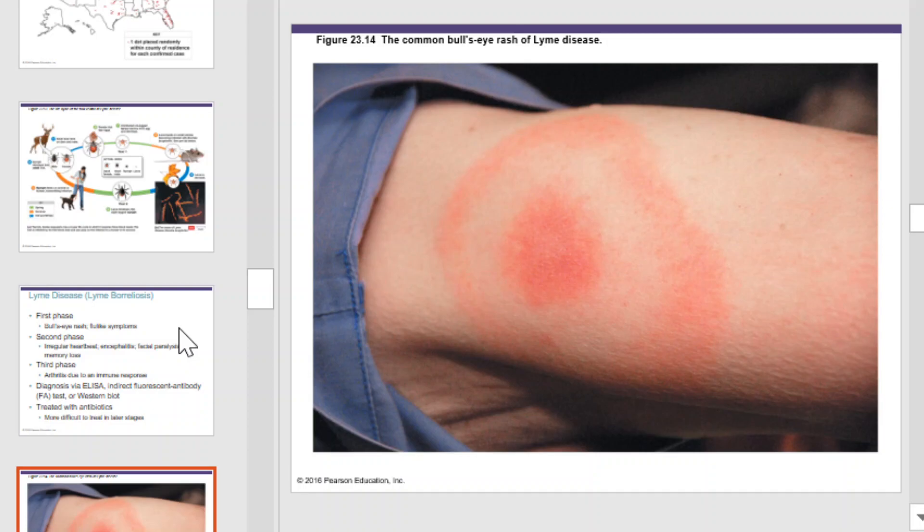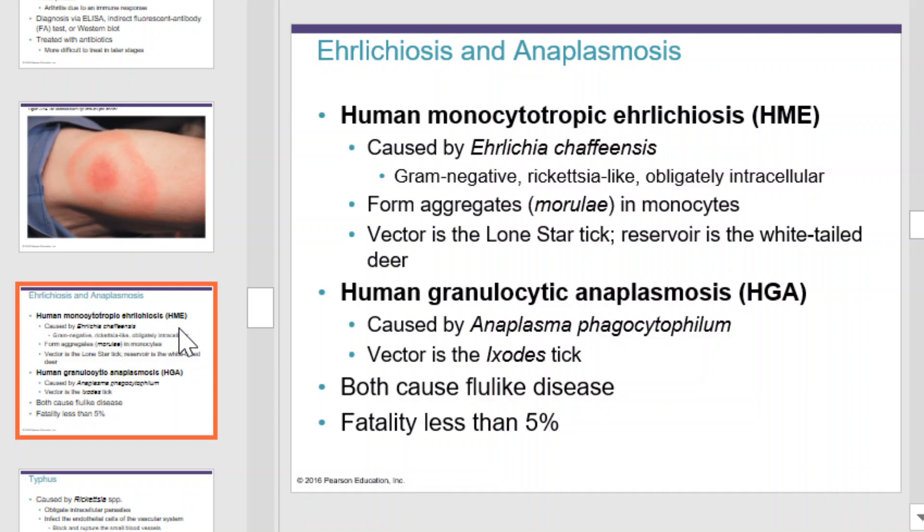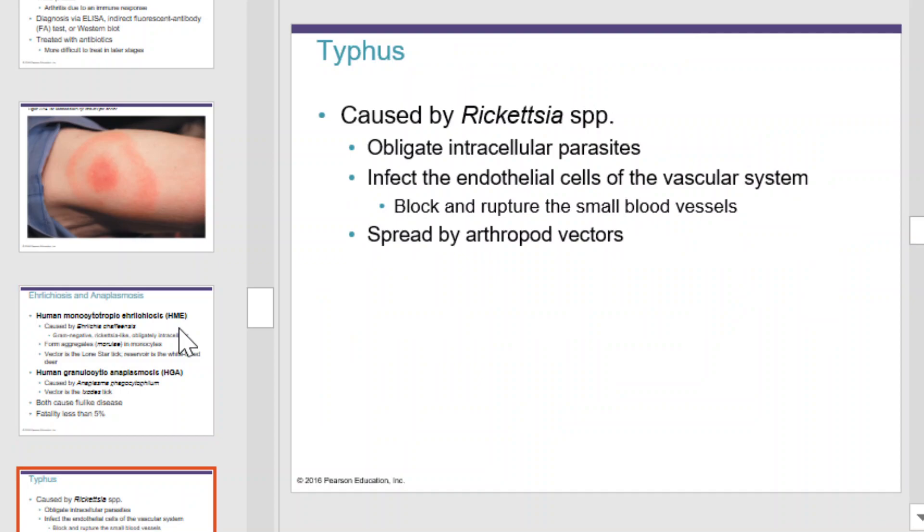Ehrlichiosis and anaplasmosis. Human monocytotropic ehrlichiosis, or HME, is caused by Ehrlichia, a gram-negative rickettsia-like obligatory intracellular organism. These organisms form aggregates, or morulae, in monocytes. The vector is the lone star tick; the reservoir is the white-tailed deer. Human granulocytic anaplasmosis, or HGA, is caused by Anaplasma. The vector is the Ixodes tick. Both cause flu-like diseases and have a fatality of less than 5%.